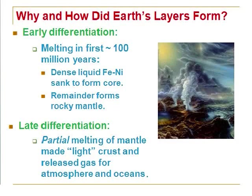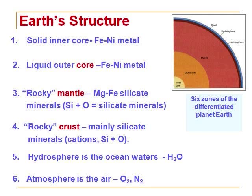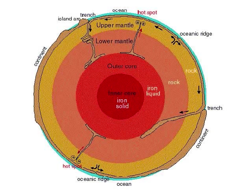In the late differentiation period, we begin to have the formation of gases. The Earth is still very hot and some of the light atoms that migrated near the surface to form the mantle begin to melt, which creates the crust and releases gases like oxygen, nitrogen, and water vapor. It is during this late differentiation that we begin to see the formation of our crust, our oceans, and our atmosphere — an Earth with familiar form and structure.